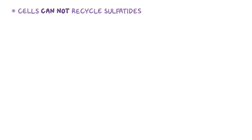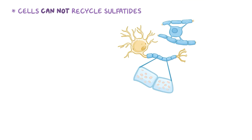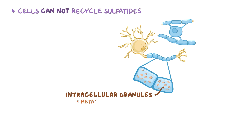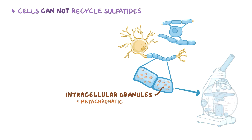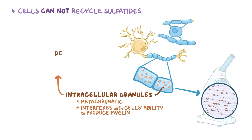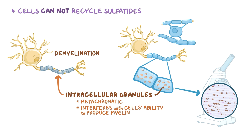Without arylsulfatase A, cells can't recycle sulfatides. The sulfatide accumulates within cells of the nervous system, like Schwann cells and oligodendrocytes, and aggregates to form intracellular granules. These sulfatide aggregates are called metachromatic, since they appear differently colored from the cellular material when stained and seen under the microscope. Sulfatide granules interfere with the cell's ability to produce myelin, resulting in demyelination, or loss of the myelin sheath of the neurons, and the end result is impaired nerve impulse transmission.